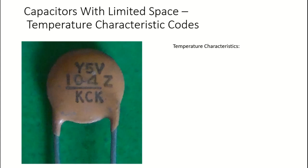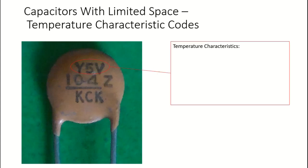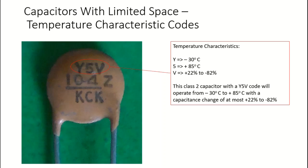Going back to our previous capacitor, you'll notice it has a code of 'Y5V' - that's the code related to the temperature characteristics. Based on our table, 'Y' means the lower end is minus 30 degrees Celsius, '5' means the upper end temperature is plus 85 degrees Celsius, and 'V' means a plus 22% to minus 82% change in capacitance. So this class two capacitor with a Y5V code will operate from minus 30 degrees Celsius to plus 85 degrees Celsius with a capacitance change of at most plus 22% to minus 82%.